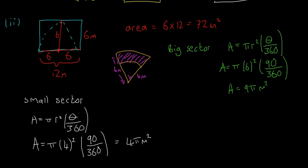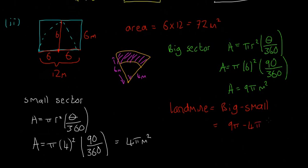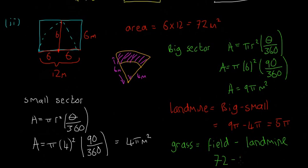The area of the landmine strip is the big sector minus the small sector: 9π − 4π = 5π metres squared. So the area of the grass equals the total field minus the landmine area: 72 − 5π. Putting that into decimal form gives us 56.29 metres squared — that's our final answer for the amount of grass in the field.